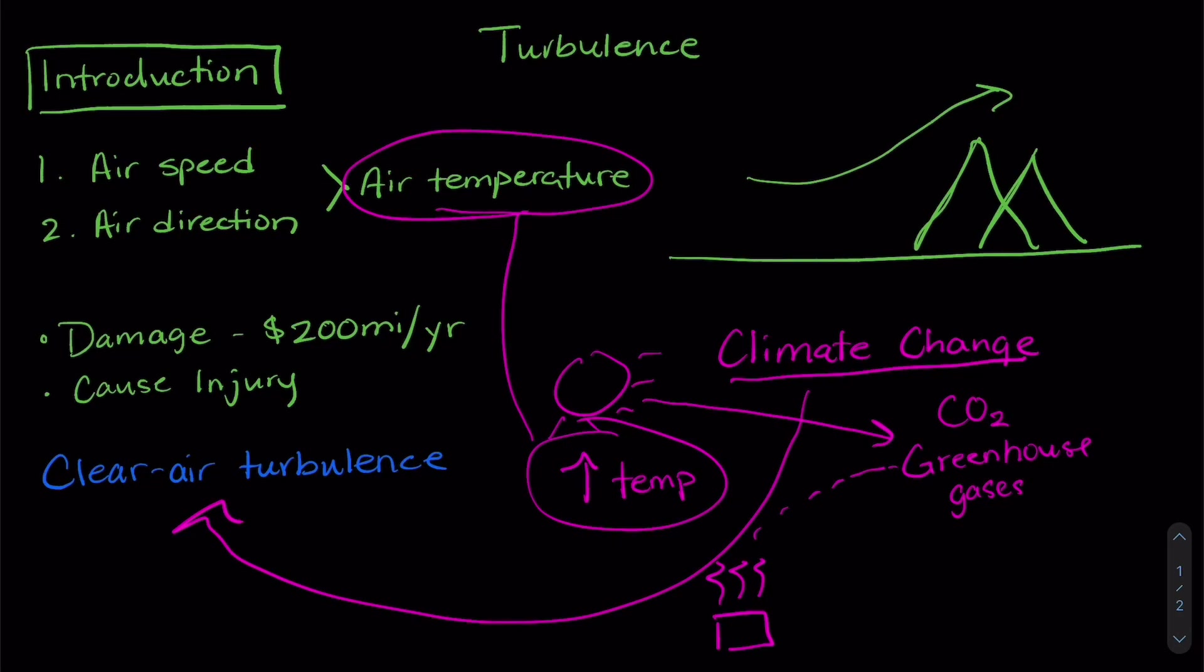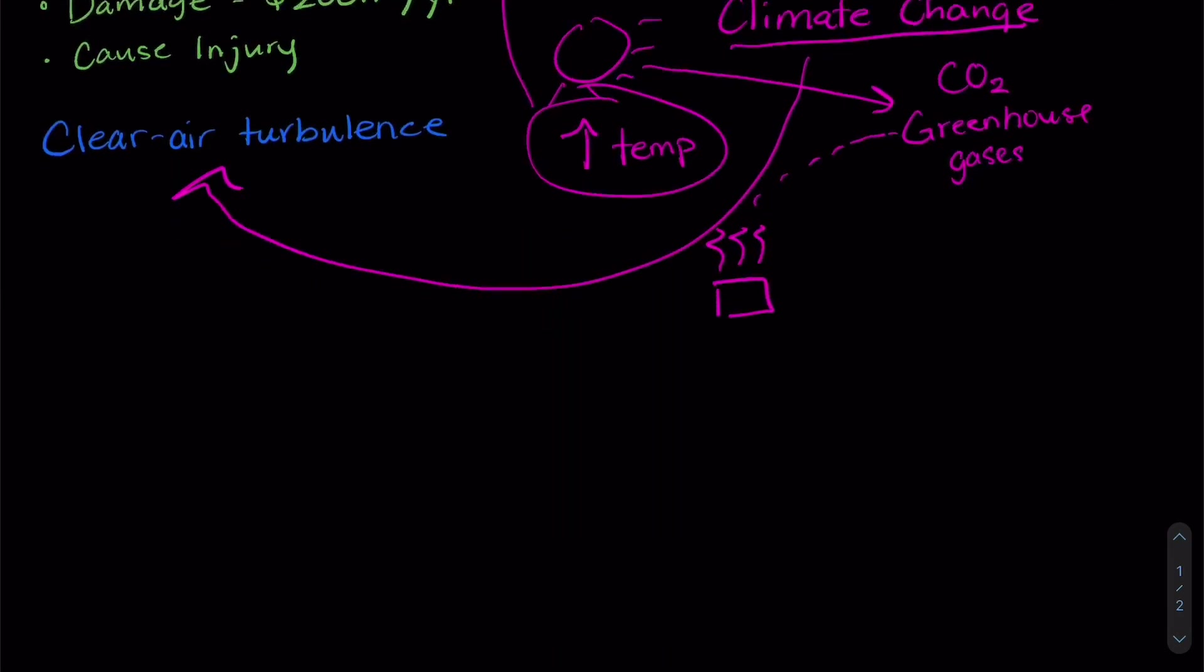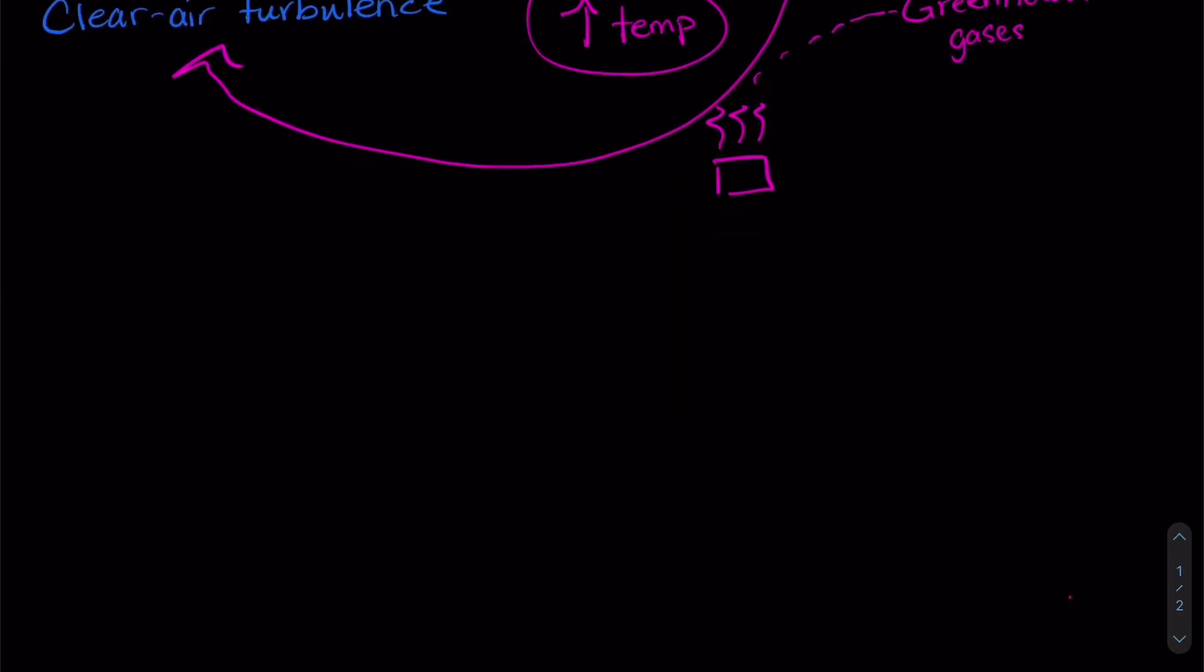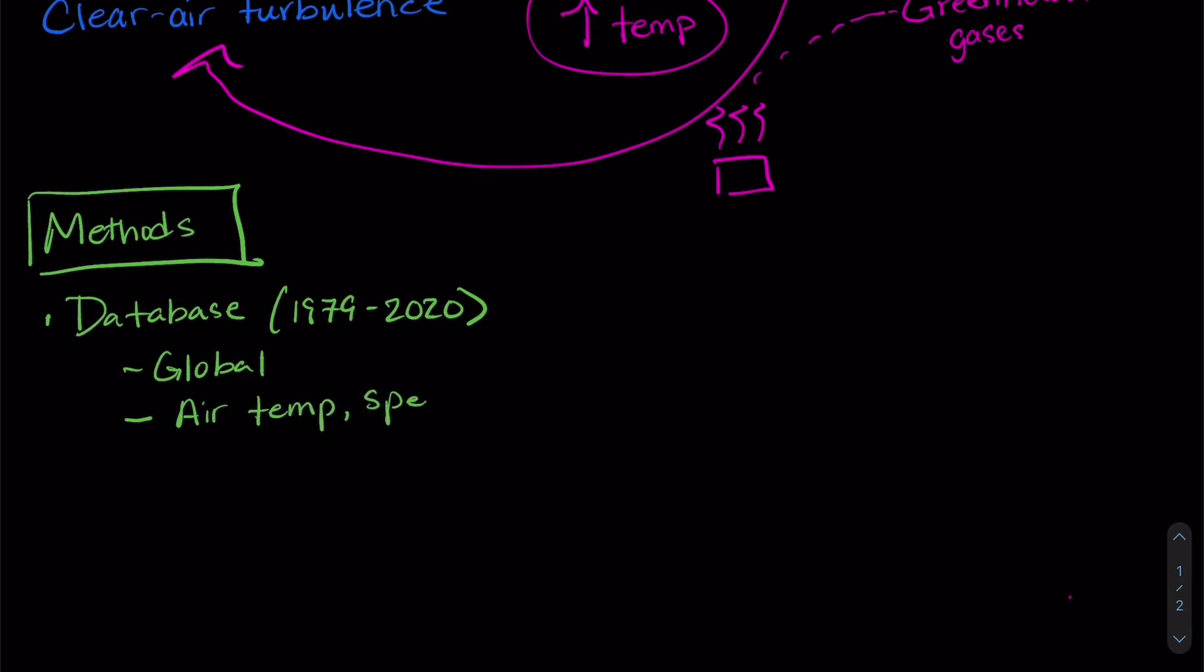So what the researchers did. Let's talk a little bit about the methods of what they did. They looked at a huge database of satellite information from 1979 to 2020 and that database was a global database. So they had data from all different points all over the globe for the whole entire 42 year cycle and this data was all about air temperature, air speed, and air direction.